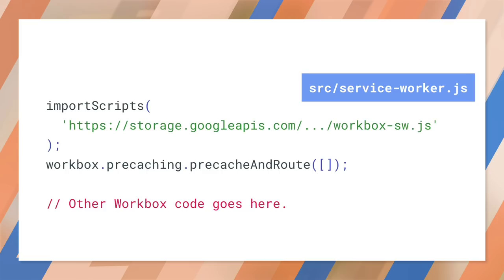Let's take a look inside one. First, we call importScripts to load the Workbox library. You can host this on your own site or get it from the Google CDN — this will be cached for you. Now, add the pre-cache and route line with an empty array. Workbox will modify this line when it generates your service worker. If you need any other custom code, it goes at the end.